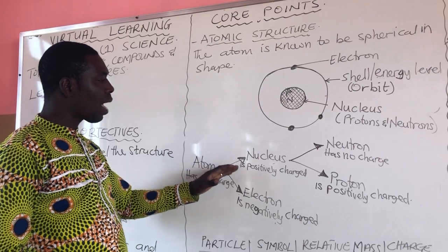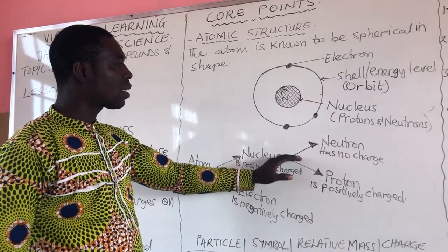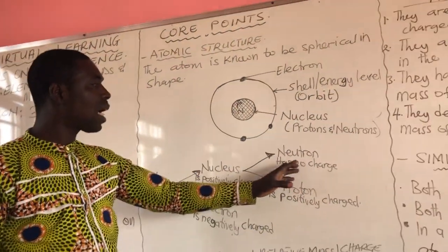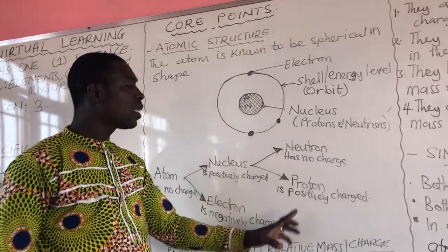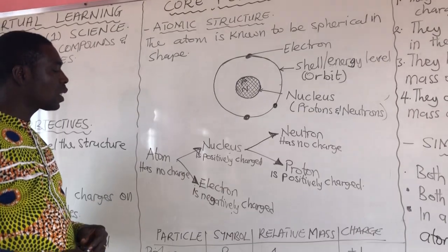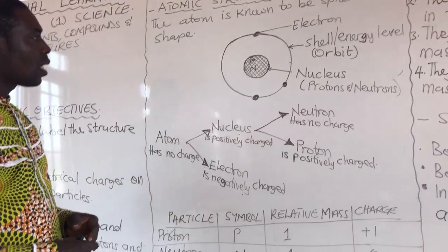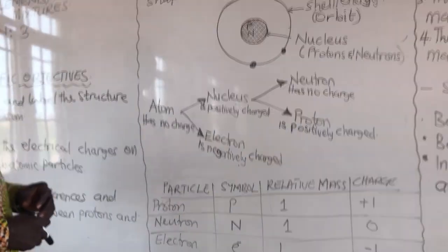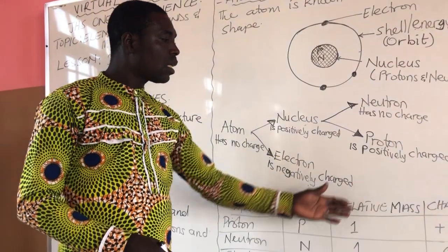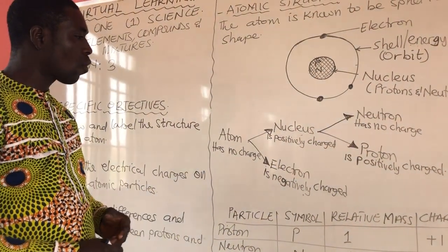From the nucleus, which also has subatomic particles, we have the neutron and the proton. The neutron has no charge, and the proton is positively charged. The electron is negatively charged. Now let's look at the table containing the particles, their symbols, their relative mass, and the charges that they carry.